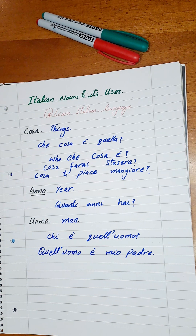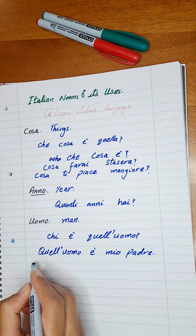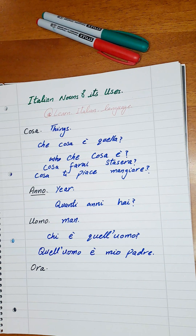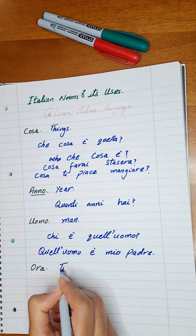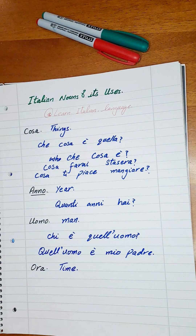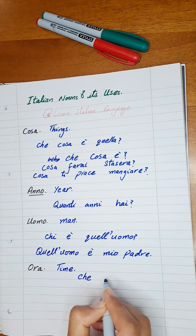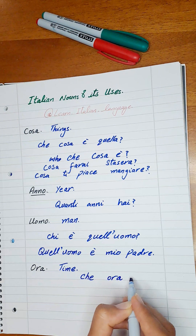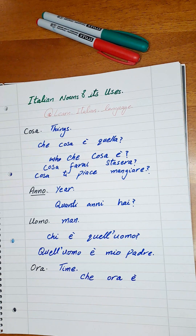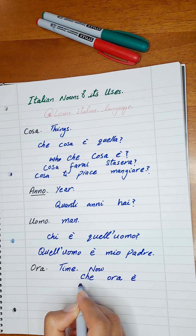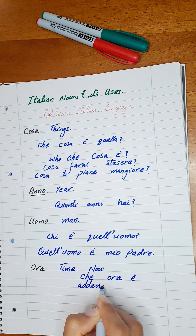Next word is Ora. Ora means 'time.' Like we say 'Ke ora e' — meaning: What time is it? Ora is also used in the meaning of 'now,' similar to adesso, when we want to say something is happening now.